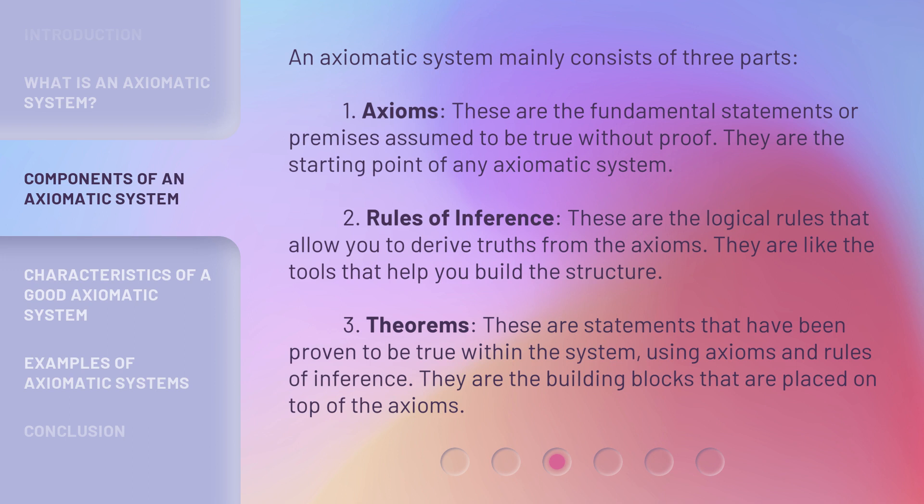Second, rules of inference. These are the logical rules that allow you to derive truths from the axioms. They are like the tools that help you build the structure. Third, theorems. These are statements that have been proven to be true within the system, using axioms and rules of inference. They are the building blocks that are placed on top of the axioms.